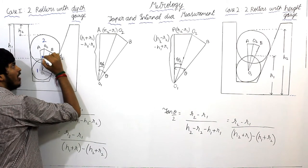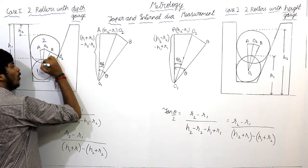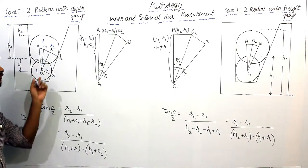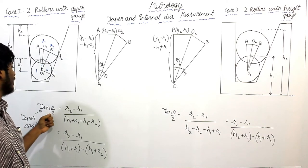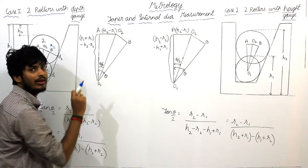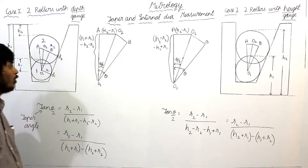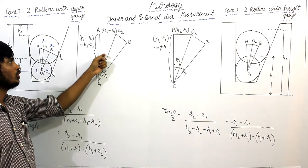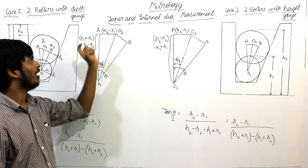We have to calculate the taper angle. The total angle is theta, but we need only the taper angle, which is theta by 2. I will explain the diagram here — for better visibility I have enlarged this triangle. We need to find the angle between A and O2, which is theta by 2. Tan(theta/2) = opposite side / adjacent side, so we need to find the opposite and adjacent sides.